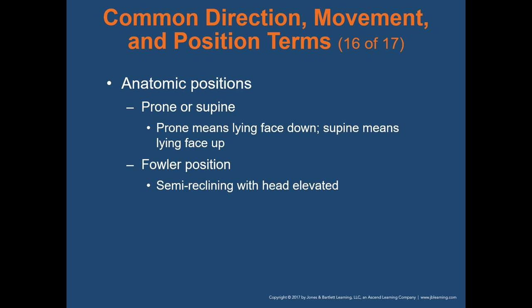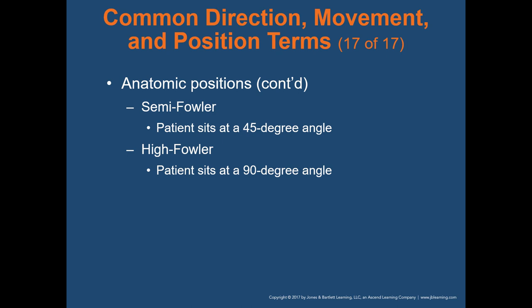Anatomic positions are the different positions a patient's body can be in. Prone and supine both involve lying flat — prone means lying face down on the belly, while supine means lying face up on the back. Fowler position is semi-reclining with the head elevated. The semi-Fowler position has the patient's head elevated at a 45-degree angle — one of the more common transport positions. The high Fowler position is sitting at a 90-degree angle, straight up.